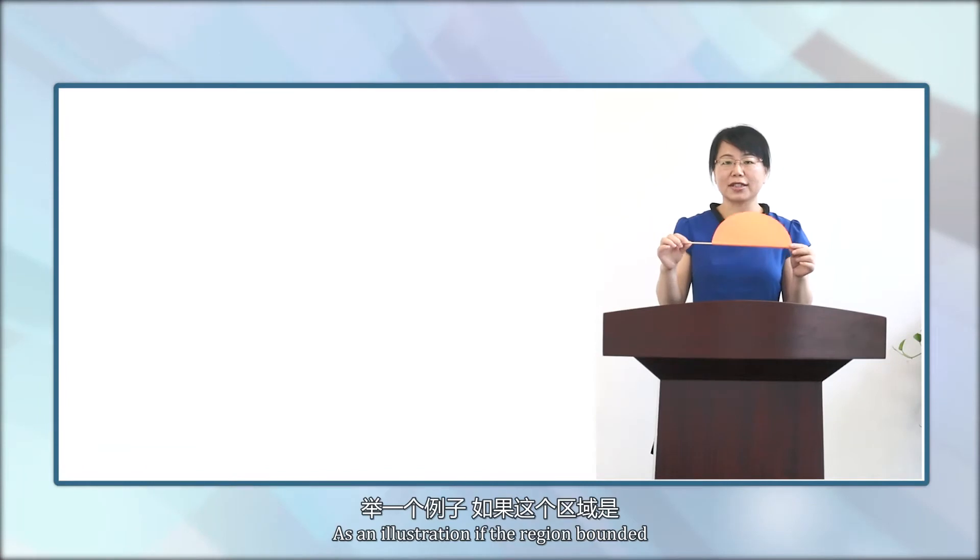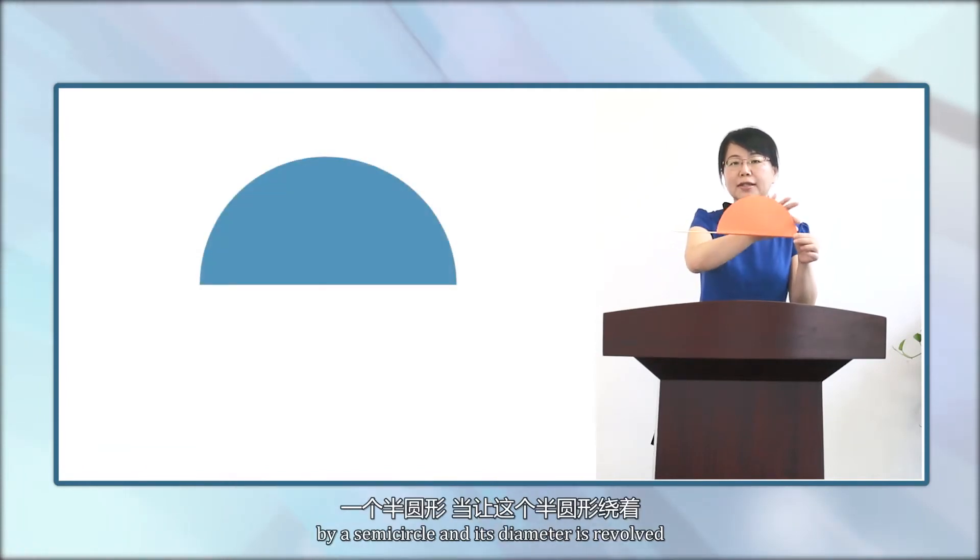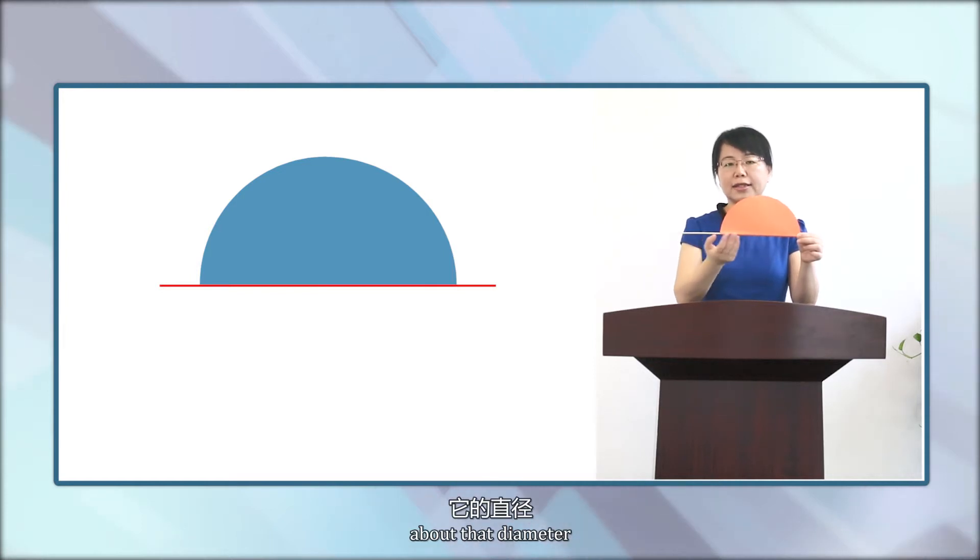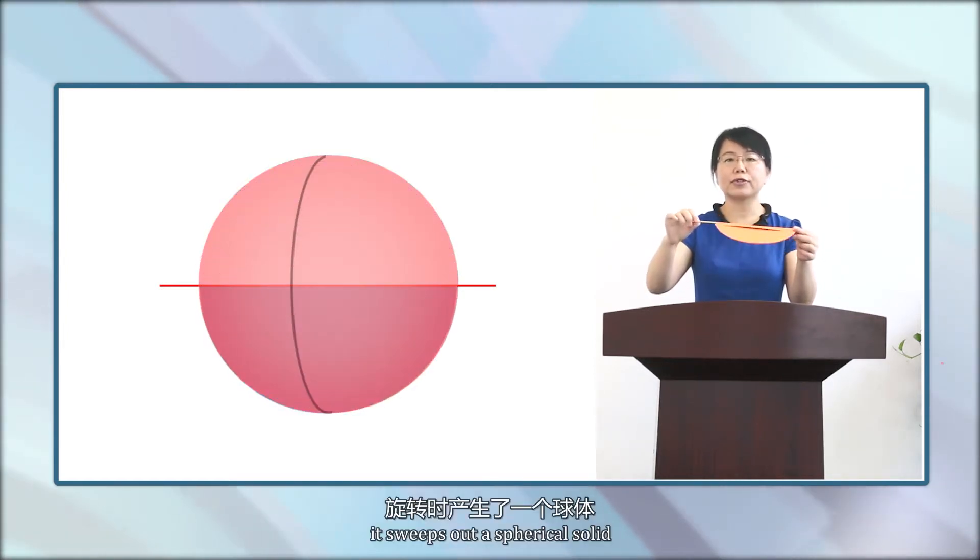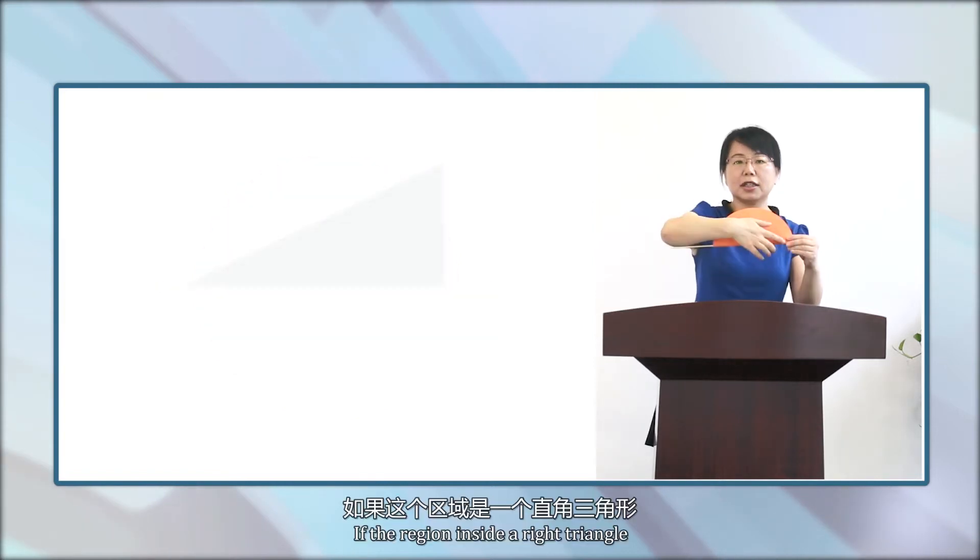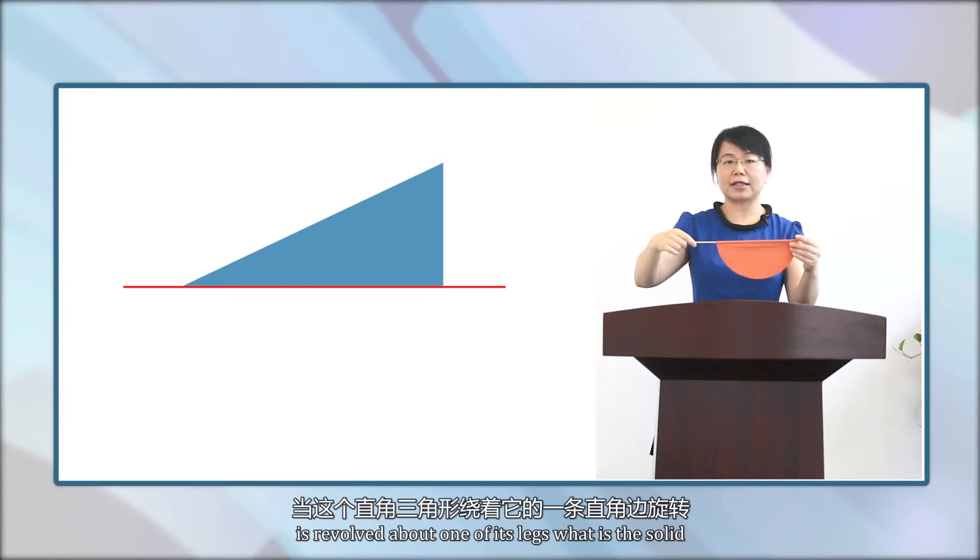As an illustration, if the region bounded by a semicircle and its diameter is revolved about that diameter, it sweeps up a spherical solid.